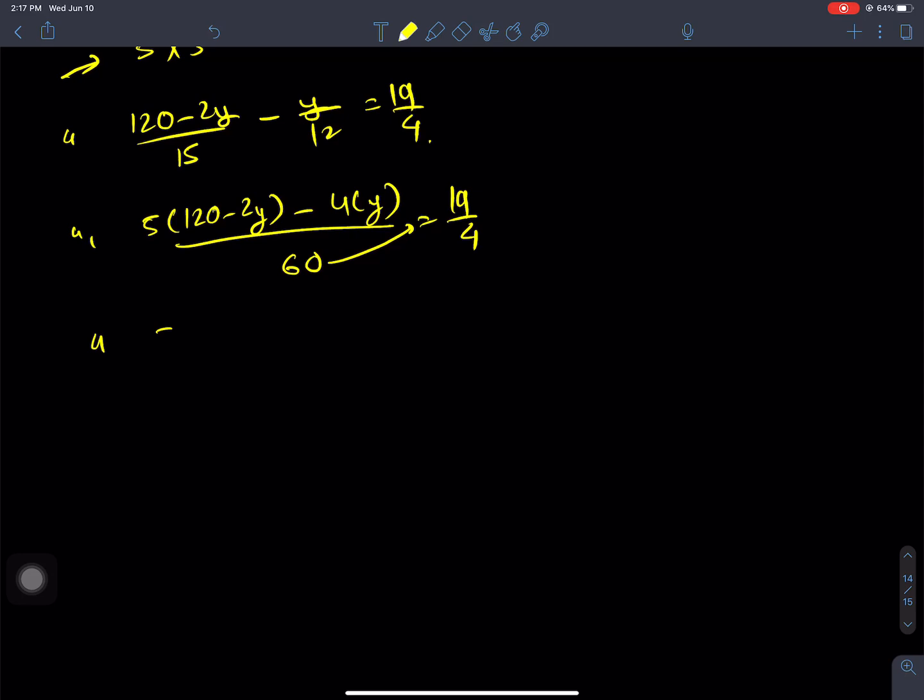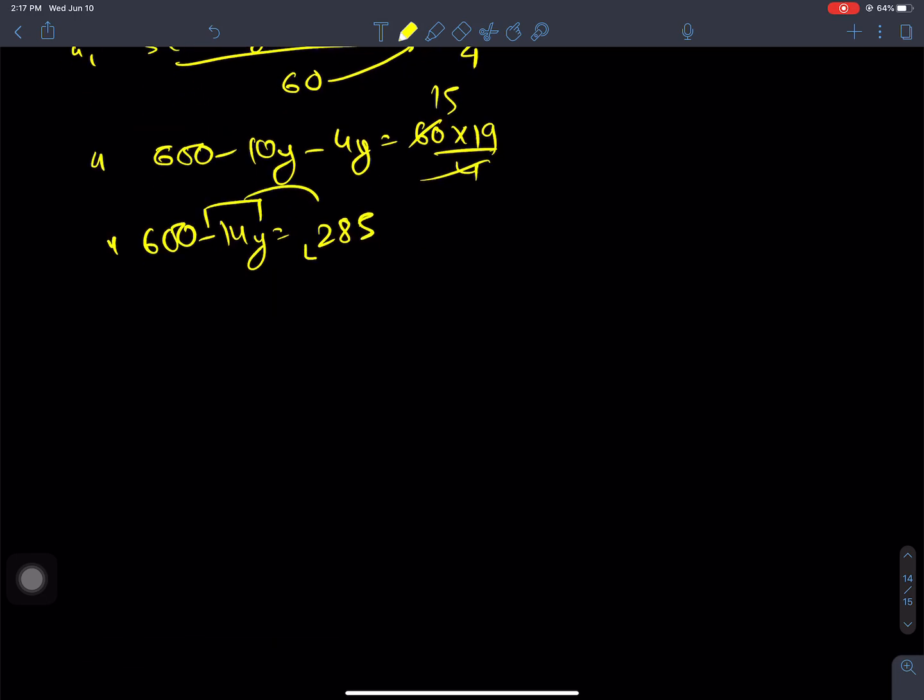Cross multiplying: 4(240 - 19y) = 30×19. So 960 - 76y = 570. Therefore 960 - 570 = 76y, which gives 390 = 76y. Wait, let me recalculate this.